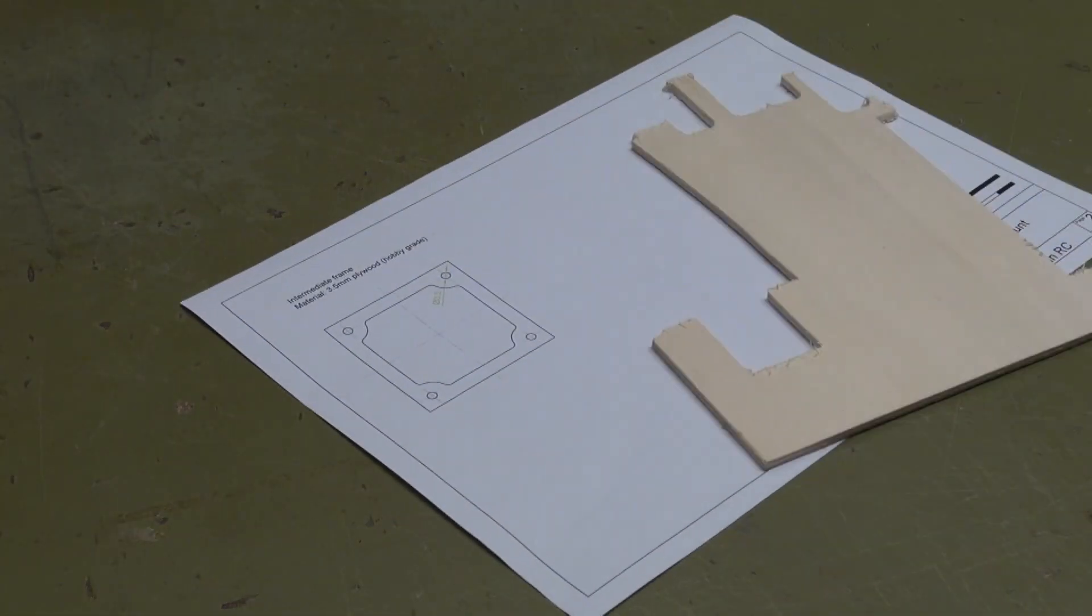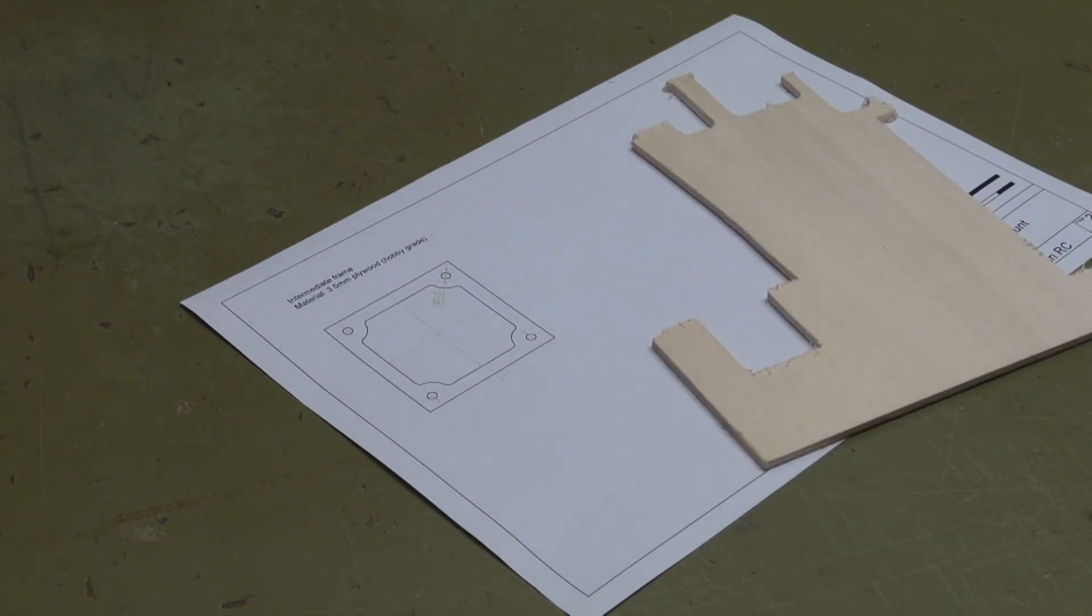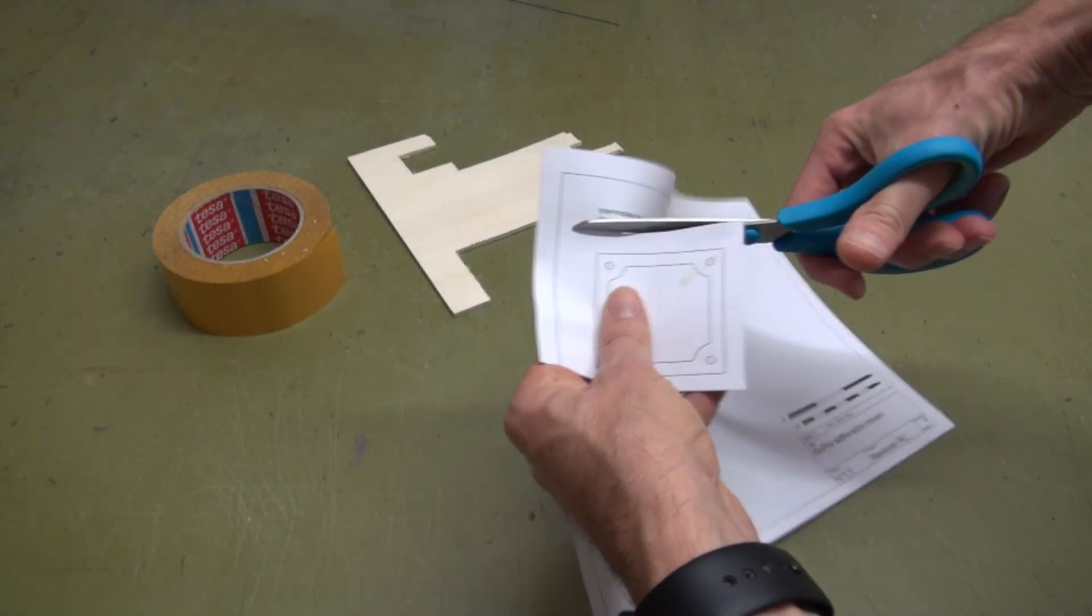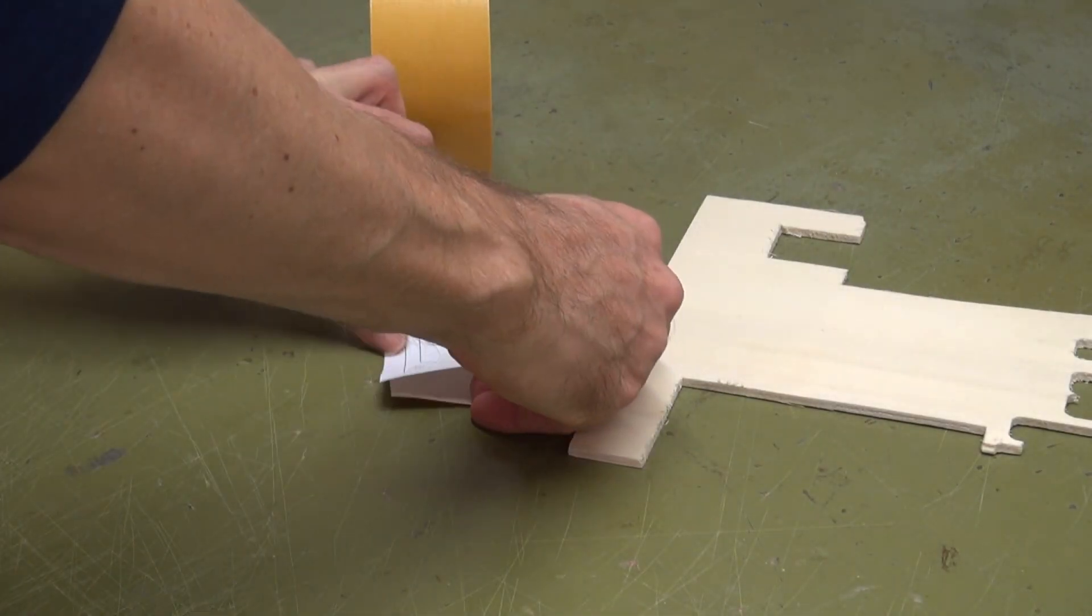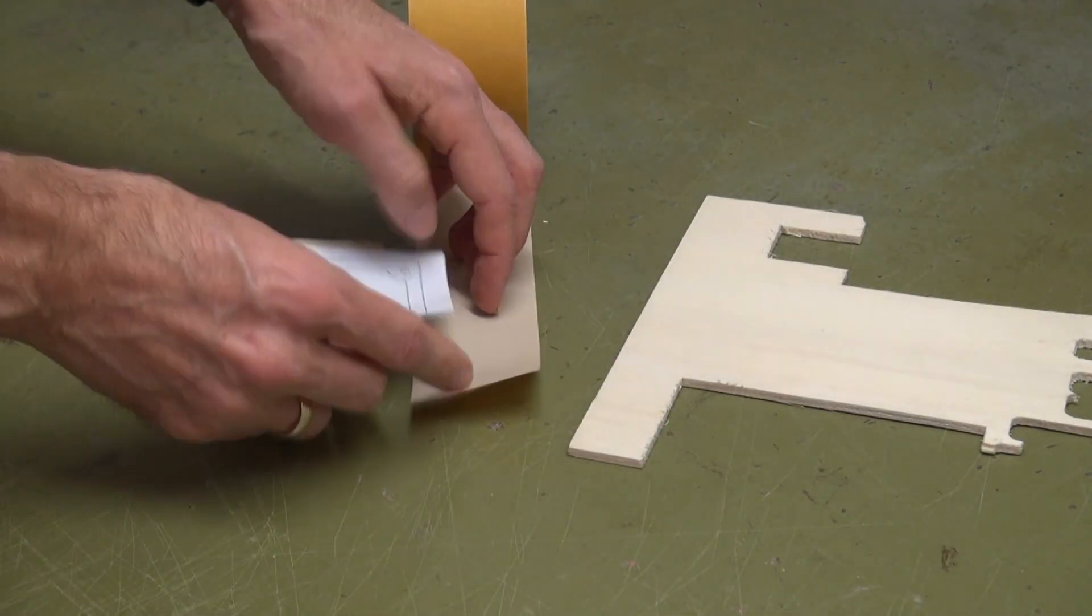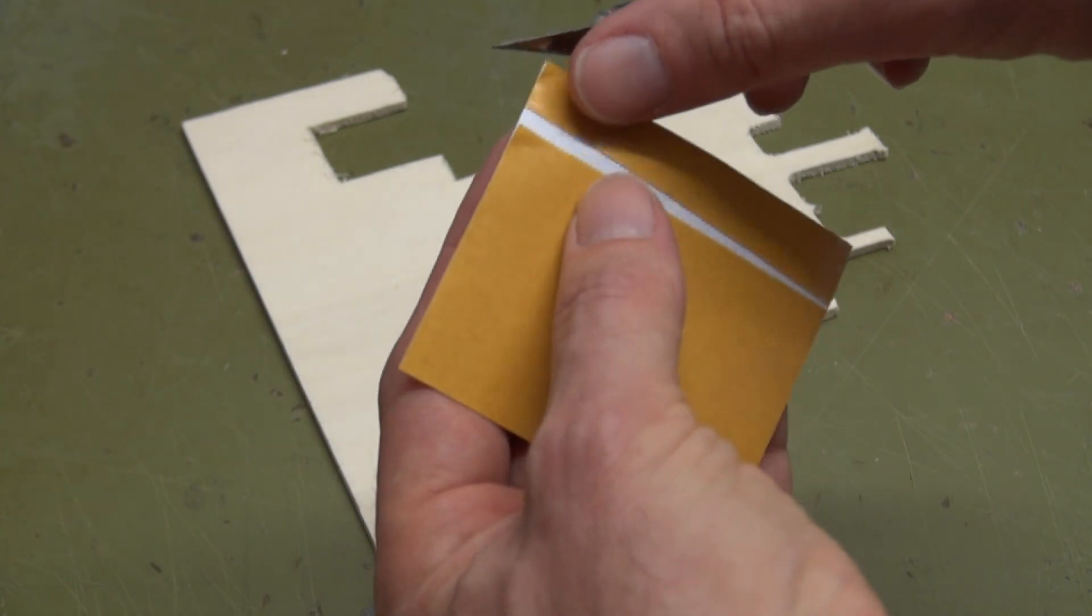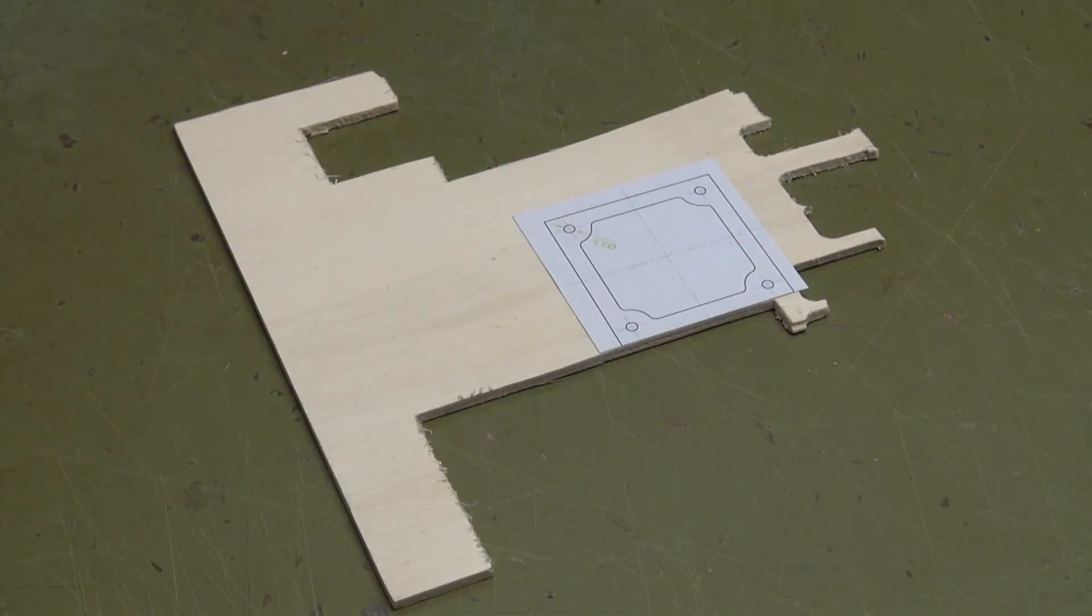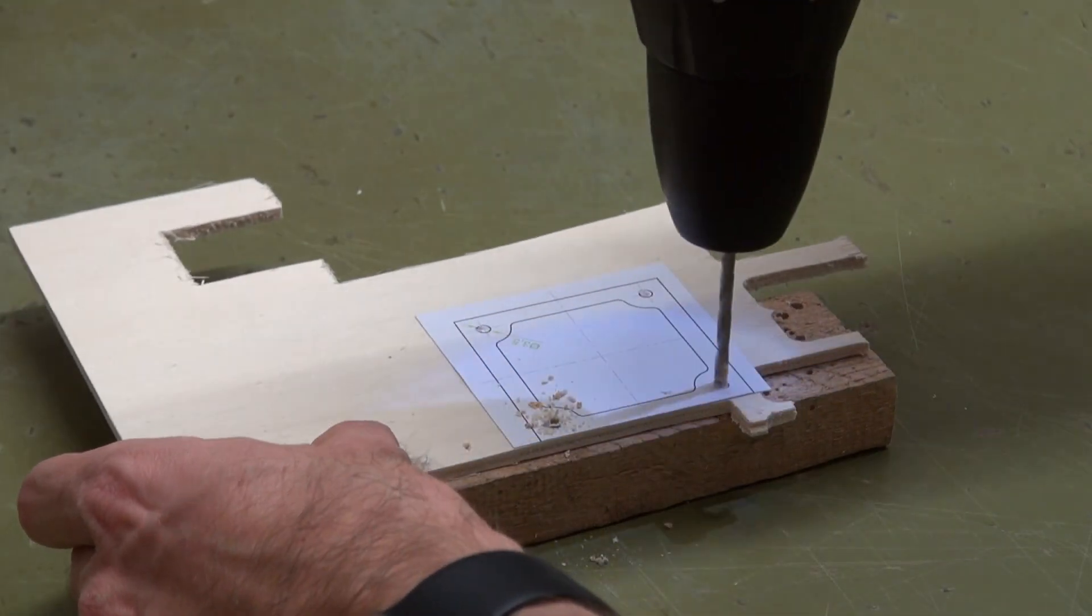In the next step I will cut out the intermediate plate. It will be located between the base plate and the GoPro mount to create some space for the strap that is holding the GoPro. If you already built the selfie stick before, you can skip the steps for the intermediate plate. It can be used for both the selfie stick and the rear stick. Drill the holes with a 3.5 mm drill.